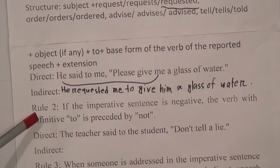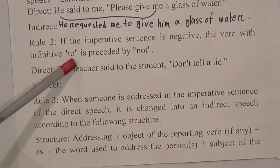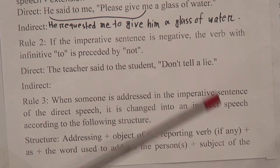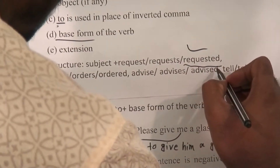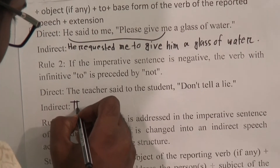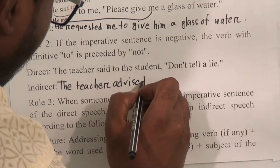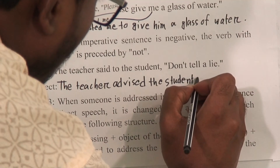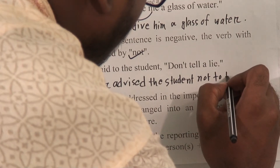Imperative sentence rules number two: if the imperative sentence is negative, the infinitive 'to' is preceded by 'not.' Look at the example — direct: 'The teacher said to the students, don't tell a lie.' This sentence is negative. Indirect: 'The teacher advised the students not to tell a lie.'